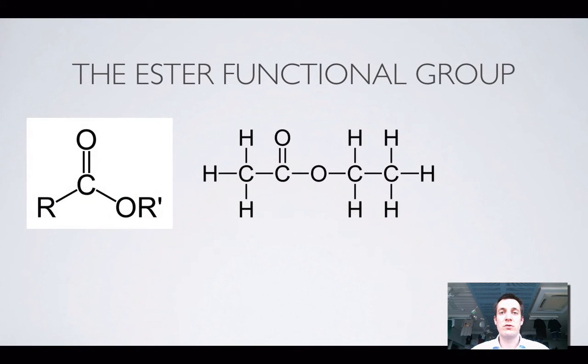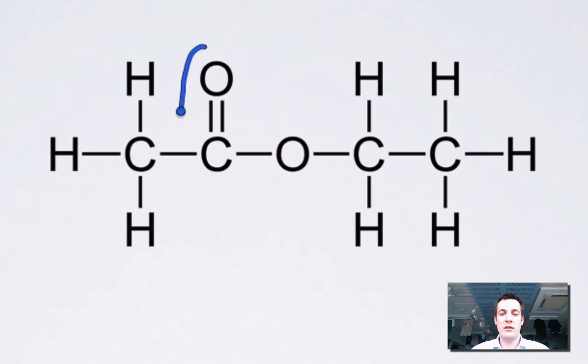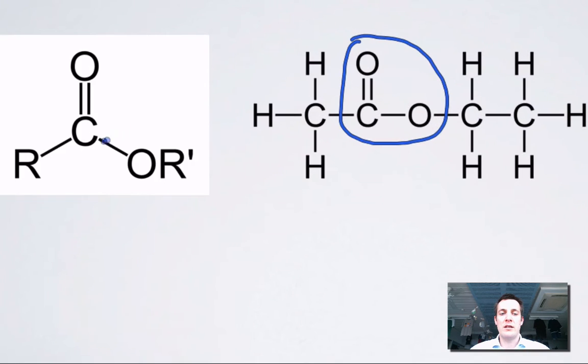So let's have a look first of all at the ester functional group and see what it looks like. Here is one in this molecule, and you might be thinking, well that looks a bit like a carboxylic acid that lost its hydrogen atom. And here in this general formula, where we're representing unspecified groups as R, we've got R, C double bond O, single bond O, and then another R group. So that's what an ester is.